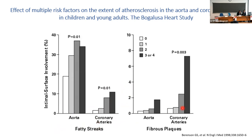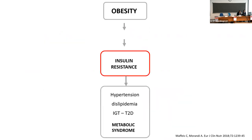Fatty streaks and fibrous plaques can be found in the arteries of young adults affected by obesity. So we have anatomical damage associated with exposure to overweight at young ages.